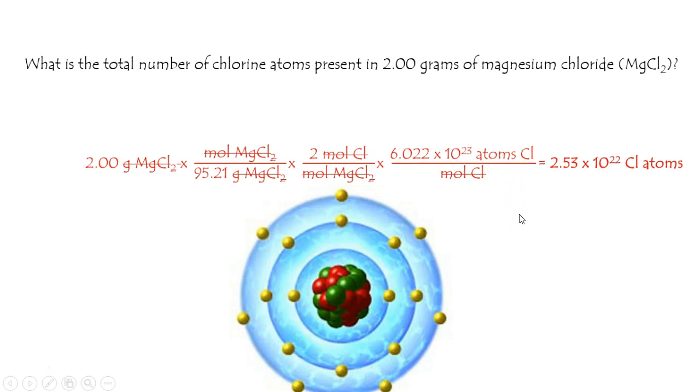Final answer is we have 2.53 times 10 to the 22 chlorine atoms in a 2 gram sample of magnesium chloride.